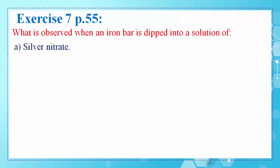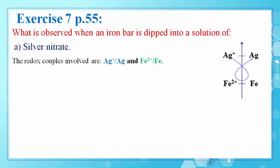The question is: what is observed when an iron bar is dipped into a solution of silver nitrate? The redox couples involved are Ag+/Ag, since we have a silver nitrate solution, and Fe2+/Fe, since we have an iron bar. We classify these two redox couples on an axis.